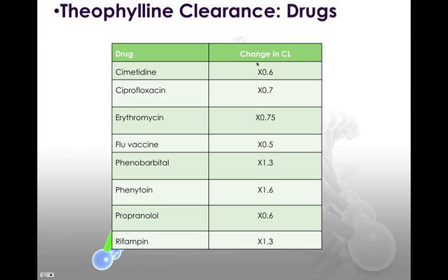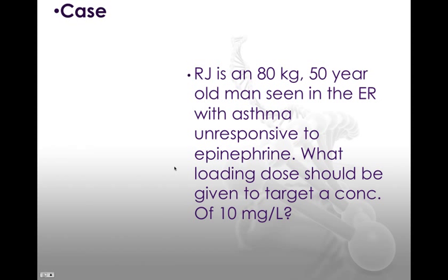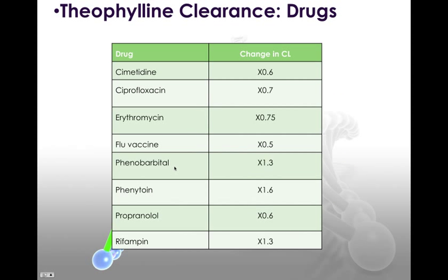There are also many drugs that will alter the clearance of theophylline — you just multiply by the appropriate factor. The drugs that increase clearance include phenobarbital, phenytoin, and rifampin. All the others decrease the clearance of theophylline, including flu vaccine, which you may not think of as a drug.